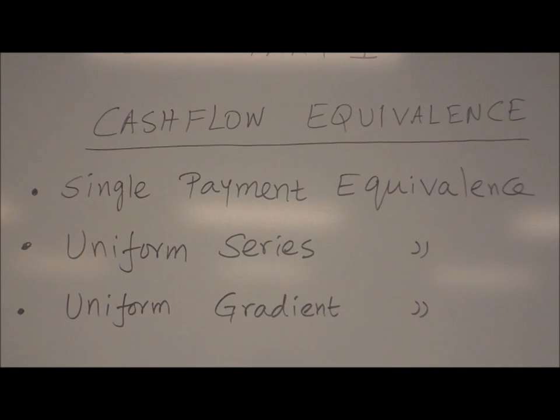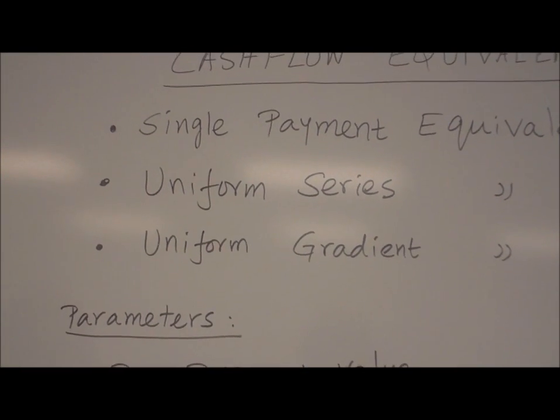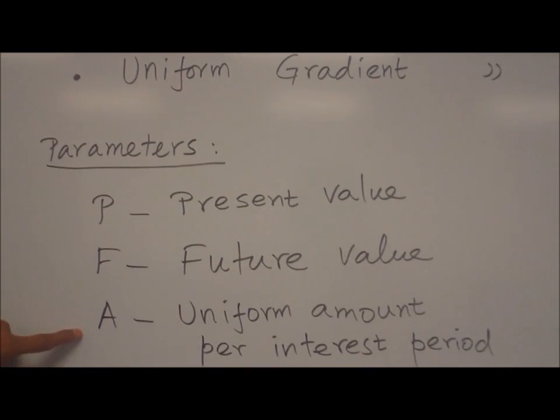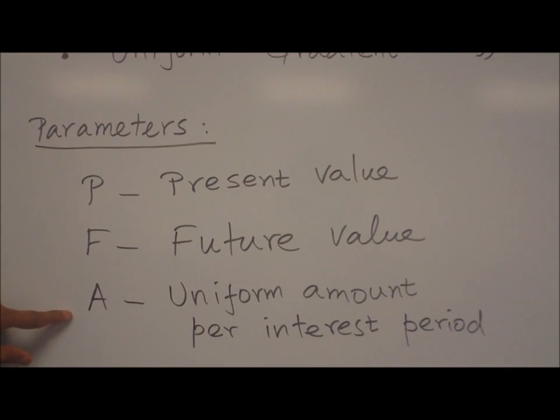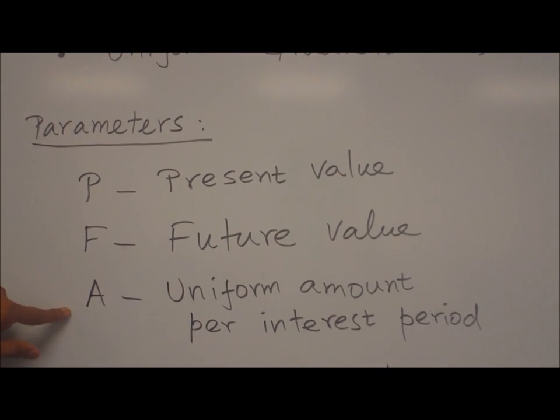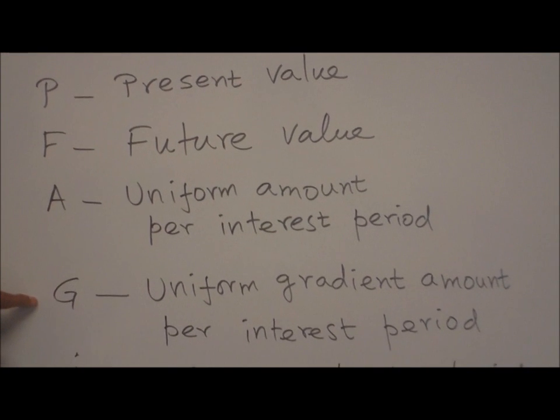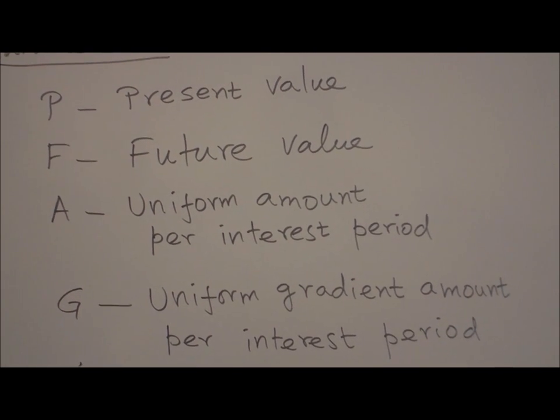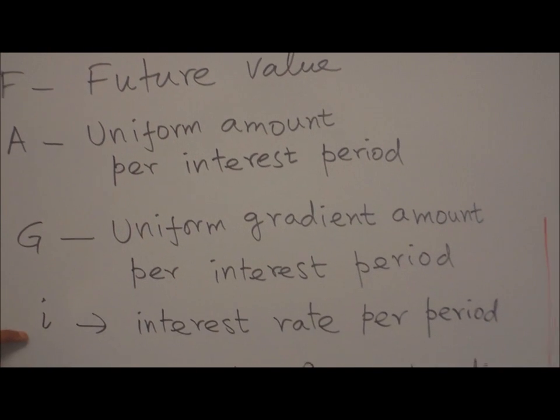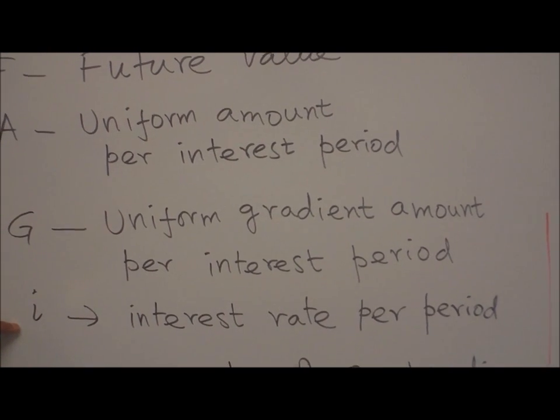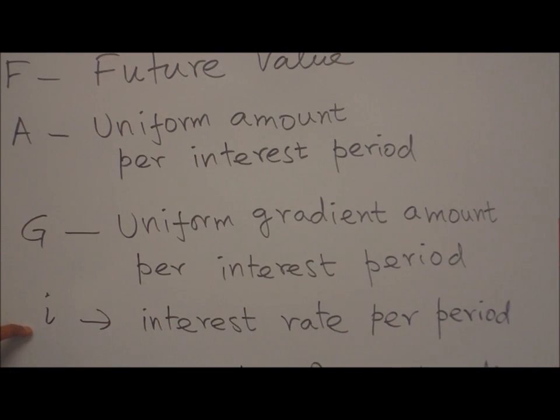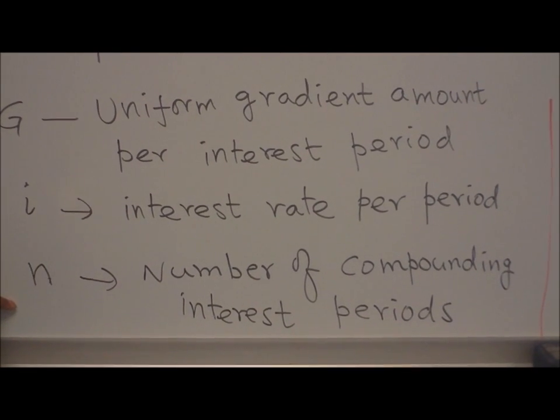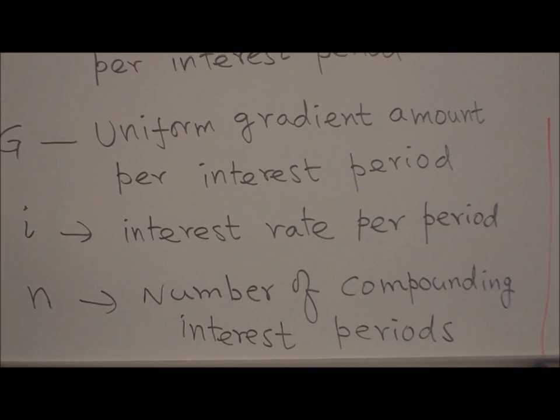Before that, let us define certain parameters so that we can calculate these values. P is present value of the money. F is future value of the money. A is Uniform Amount Per Interest Period. G is Uniform Gradient Amount Per Interest Period. I is Interest Rate Per Period. N is number of compounding interest periods.